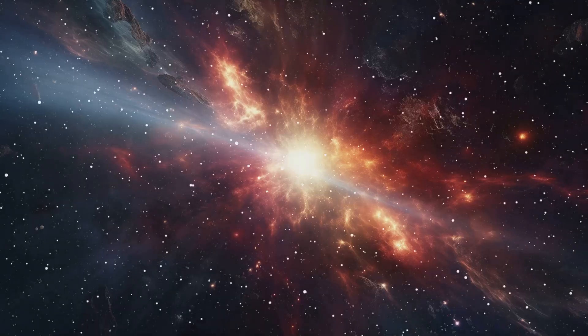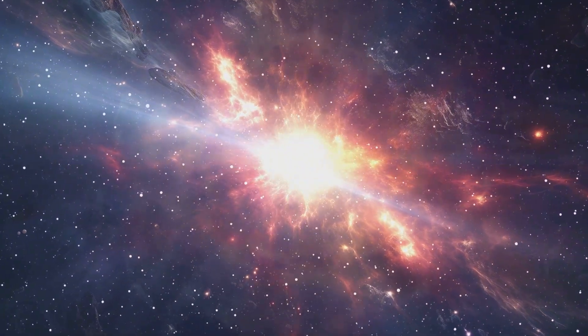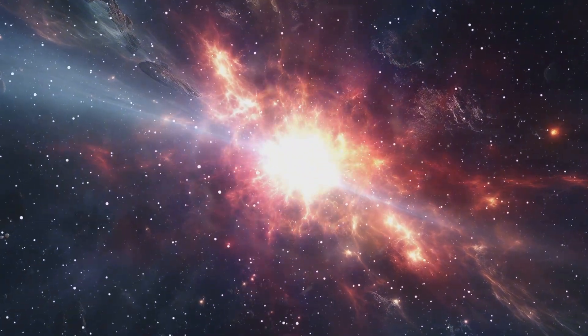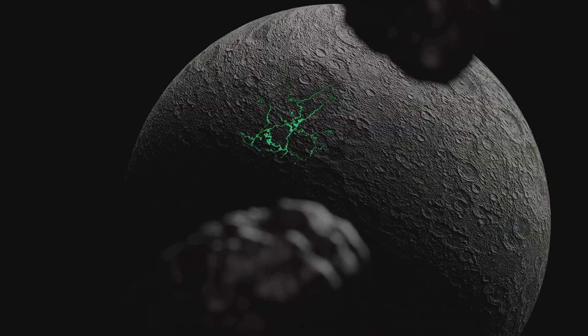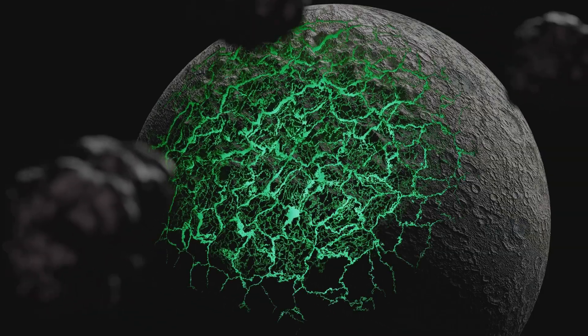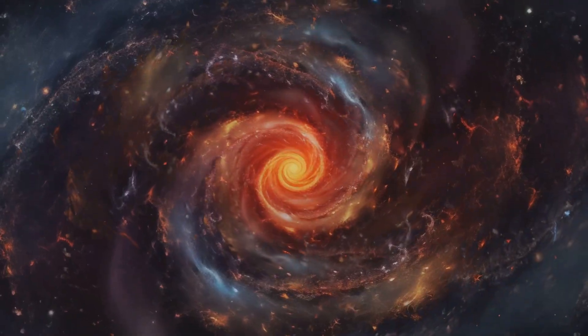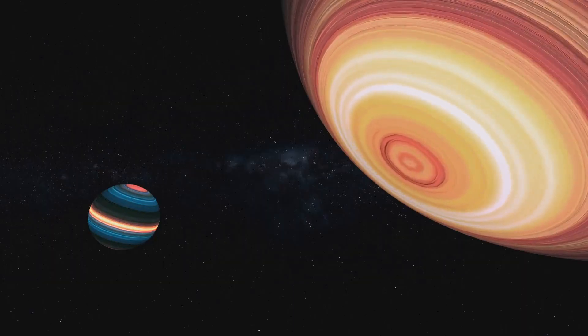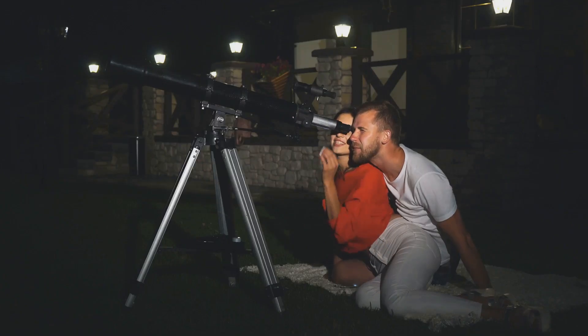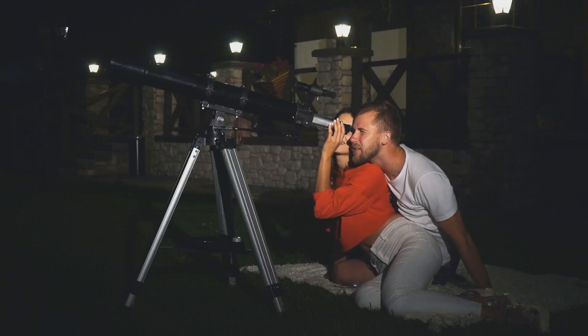In the vastness of space, pulsars and magnetars are what's left after massive stars live short bright lives and then die. Both are incredibly dense, heavier than our sun but packed into a ball only a few miles across, and both spin really fast. But their different magnetic fields and how they release energy make them unique, teaching us about how stars evolve and about extreme physics.